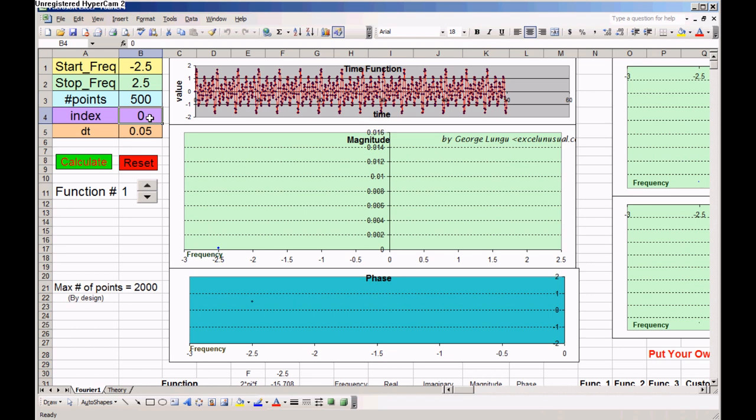This is just an integer which will be incremented by the macro while it's calculating the Fourier transform for various frequencies. So the index will be a number running between zero to the maximum number of points, which in this case is 500.